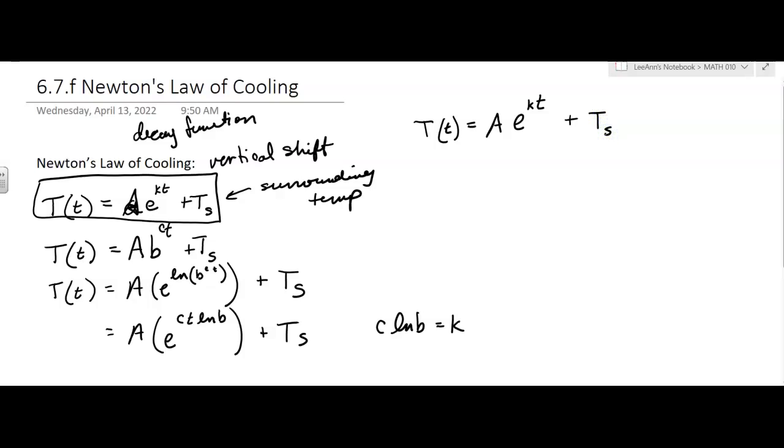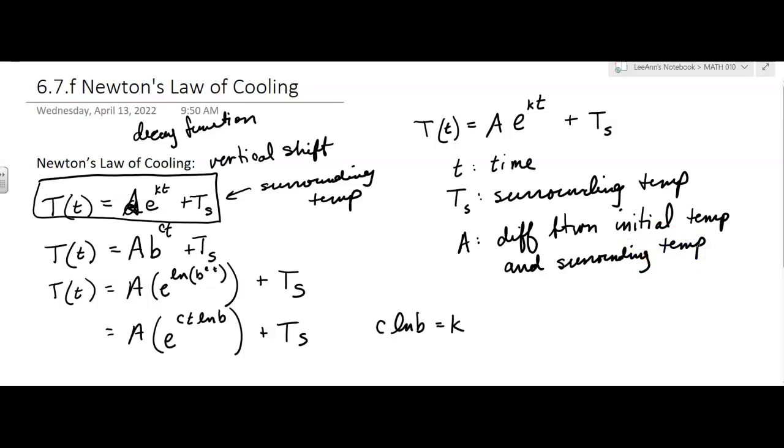Our little t is time. The capital T_S is the surrounding temperature. The A represents the difference between the initial temperature and the surrounding temperature. K represents the constant, some constant that we probably don't know and have to figure it out.